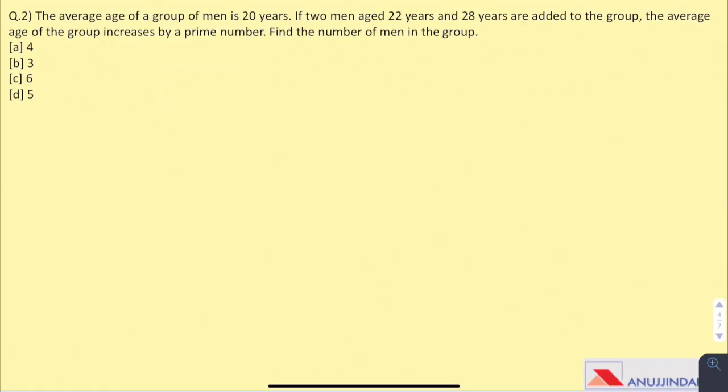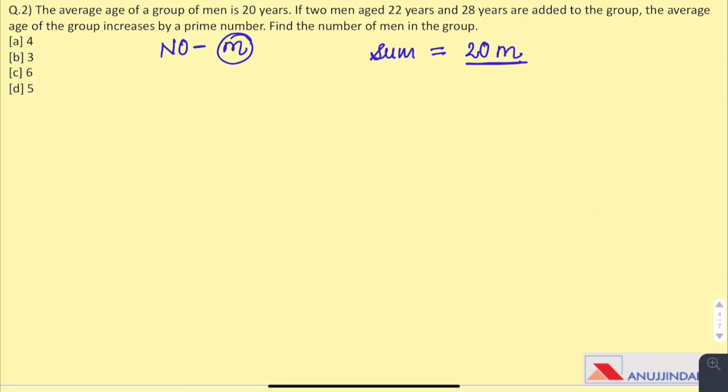Question 2. The average age of a group of men is 20 years. If two men aged 22 years and 28 years are added to the group, average age of group increases by a prime number. Find the number of men in group. Let us assume initially the number of men is m. Sum of their ages would be 20m, as the average is 20.